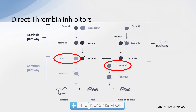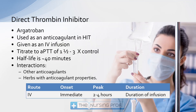We also have direct thrombin inhibitors — medications affecting factor 13 and factor 2 in the coagulation cascade. These may be used as an anticoagulant in patients who have developed heparin-induced thrombocytopenia. Given as an IV infusion, onset is pretty immediate, peaks within about two to four hours, and duration lasts for the infusion then fades quickly. Titrate to an APTT of about one and a half to three times control. Half-life is about 40 minutes. Interactions include other anticoagulants and herbs with anticoagulant properties.